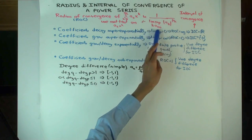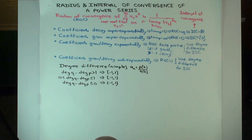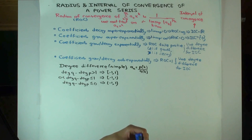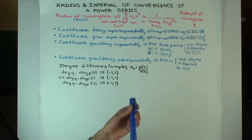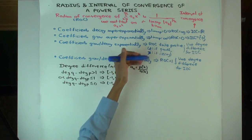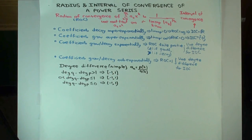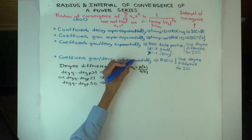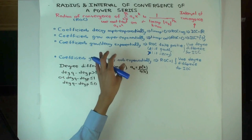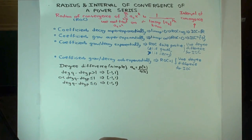There are two other cases; one is where the coefficients grow or decay exponentially, so the radius of convergence is a finite positive value — roughly the reciprocal of the exponential growth rate. This number, the limsup, roughly describes the exponential growth rate of the coefficients, and the reciprocal of that gives you the radius of convergence. Right now we are going to consider the situation where the coefficients grow or decay sub-exponentially.